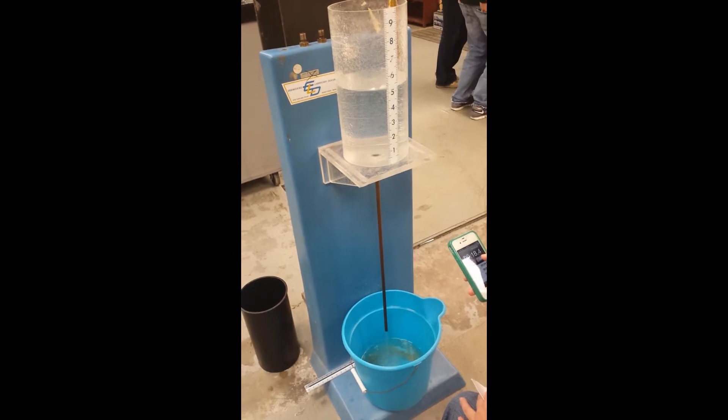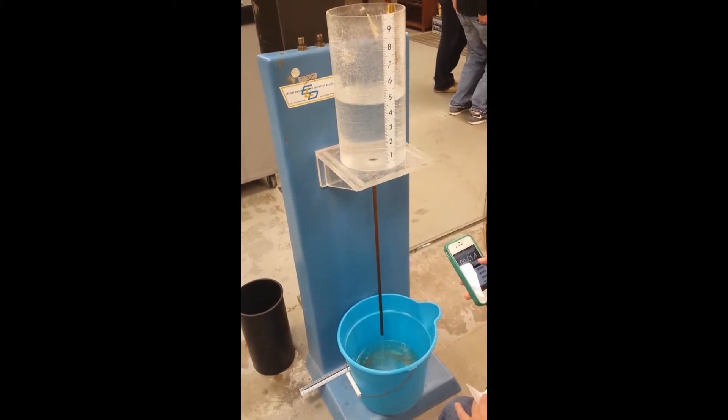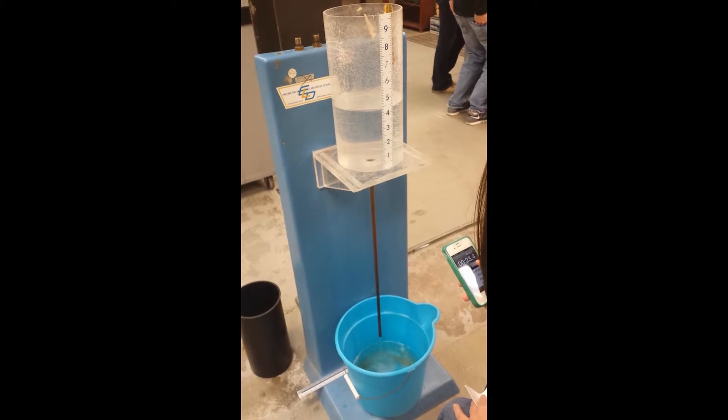The time for the water to drain 1/10th of a foot, which are the markings seen on the tank, was measured 5 times to get an average value.